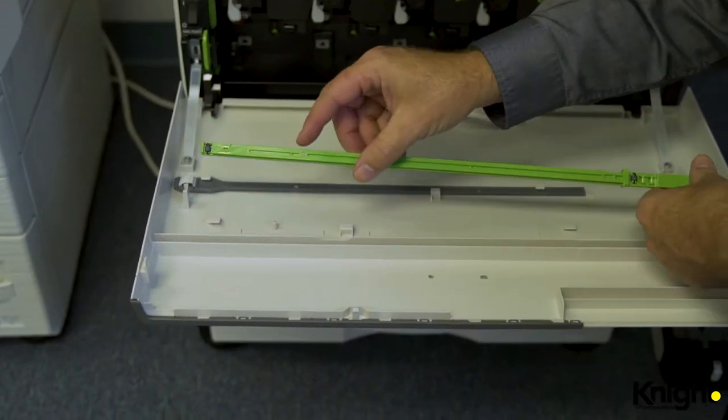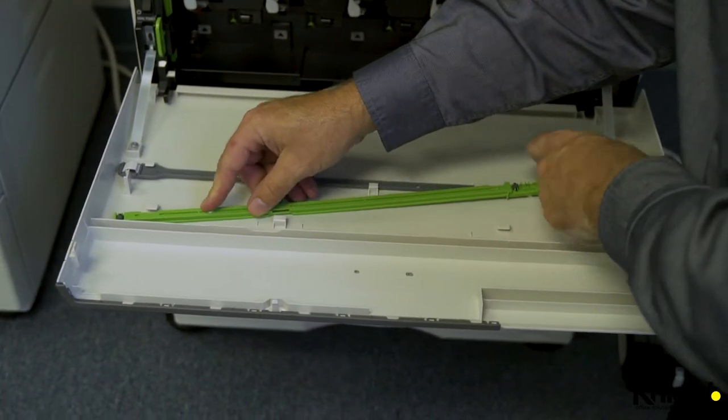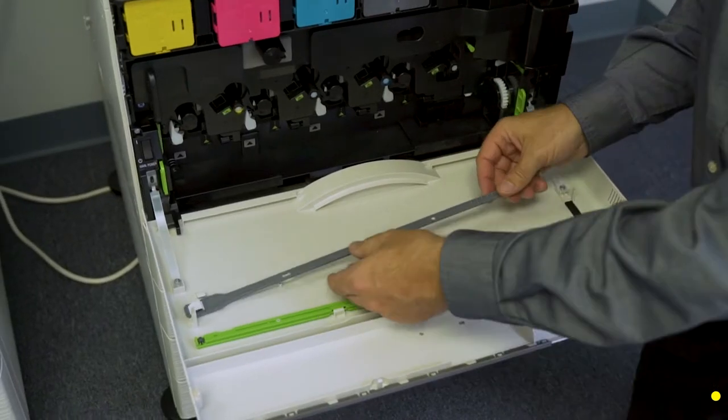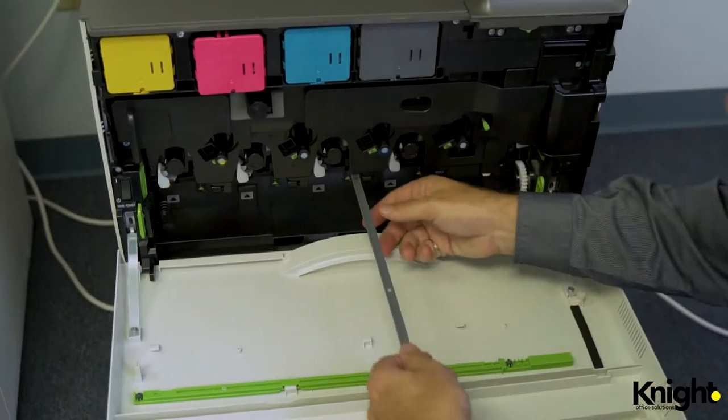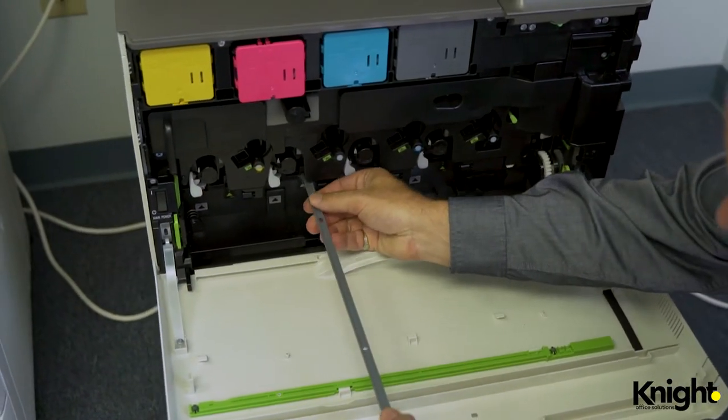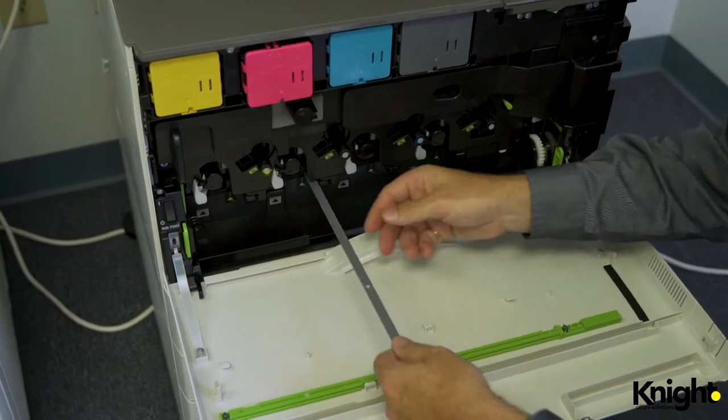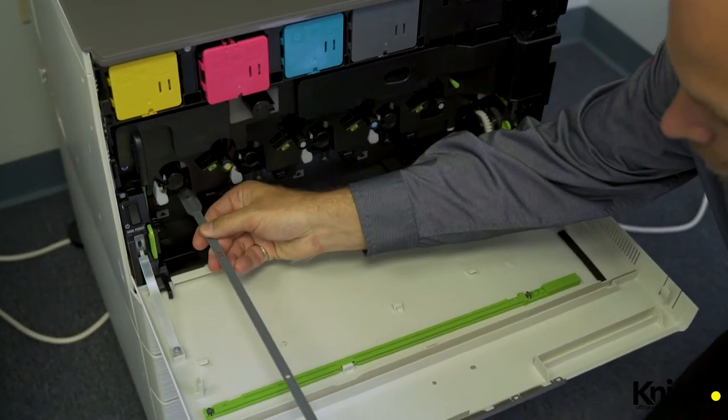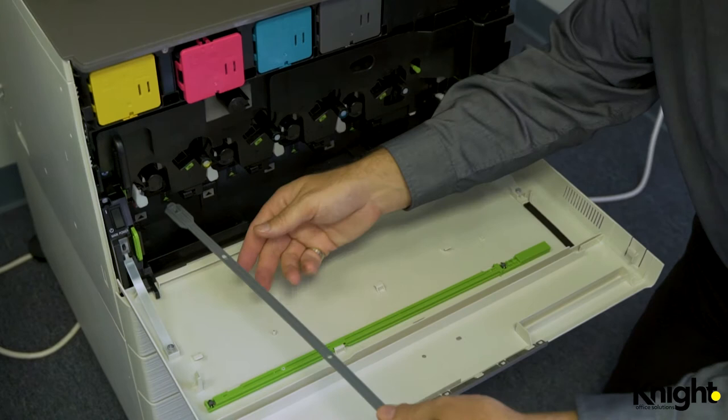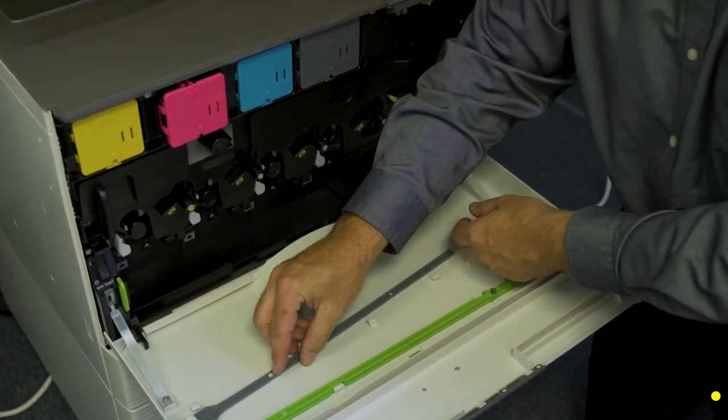After you finish the cleaning process, return the green wand to its holder. If you are experiencing void lines on your copies, there's a laser glass cleaning tool located next to the green wand. Remove the tool and insert it in the corresponding access ports under each drum unit. Slide it back and forth two to three times. When you're done, place it back inside the front cover.